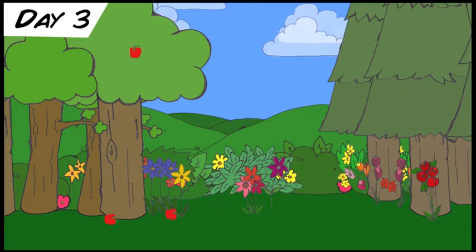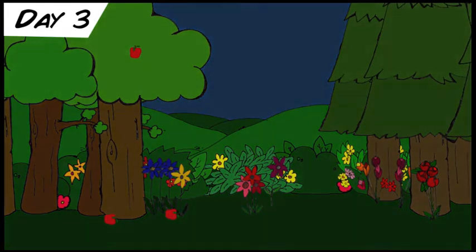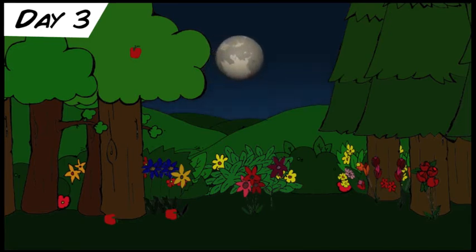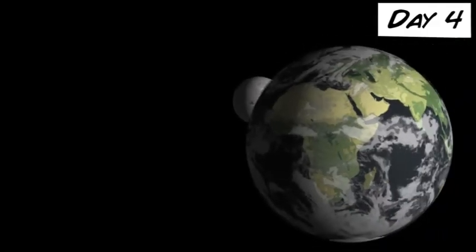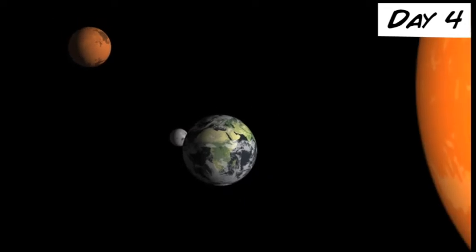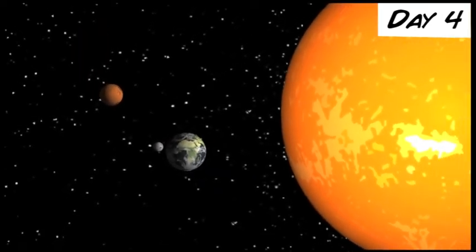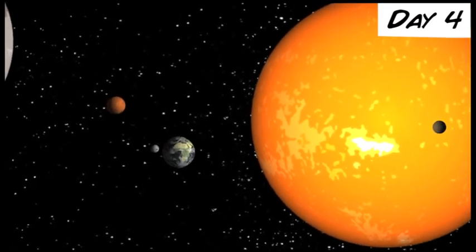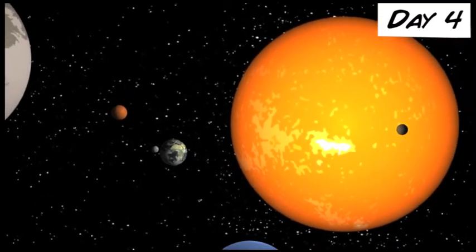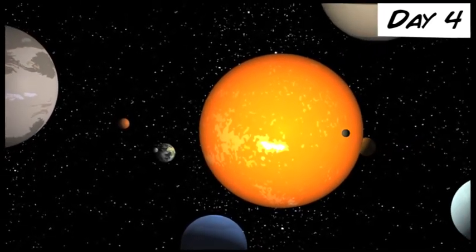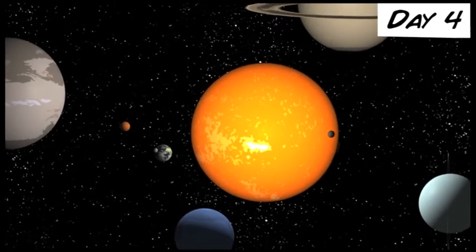Then God said, Let the light appear in the sky to separate the day from the night. Let them mark off the seasons, days, and years. Let these lights in the sky shine down on the earth. And that is what happened. God made two great lights, the larger one to govern the day, and the smaller one to govern the night. He also made the stars. God set these lights in the sky to light the earth, and to separate the light from the darkness. And God saw that it was good. Evening passed and morning came, marking the fourth day.